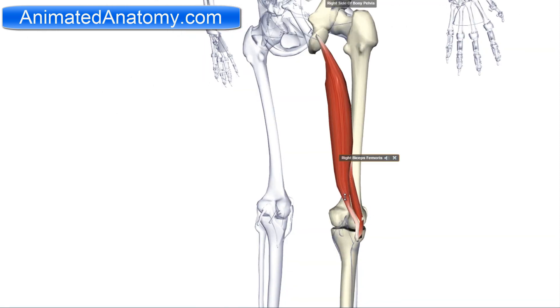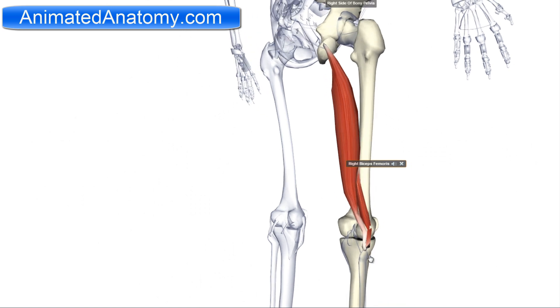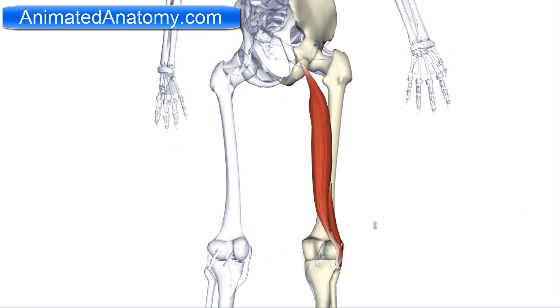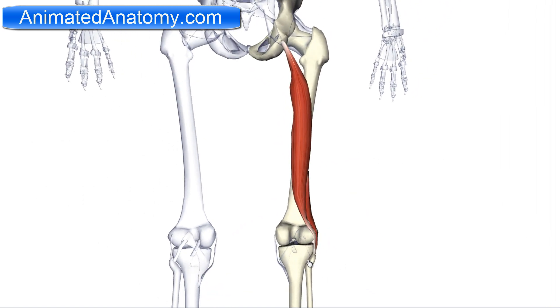This muscle inserts on the head of the fibula. The head of the fibula then articulates with the back of the lateral condyle of the tibia.